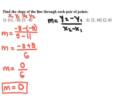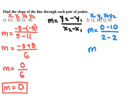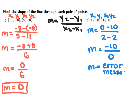For the other example, I'm going to call the points x1, y1, x2, y2. Substituting into the slope formula, I get 0 minus 10 over 2 minus 2. Now 0 minus 10 gives negative 10, and 2 minus 2 gives 0. When you plug this into the calculator, you get an error message, because you can't divide by 0. So the slope is undefined.